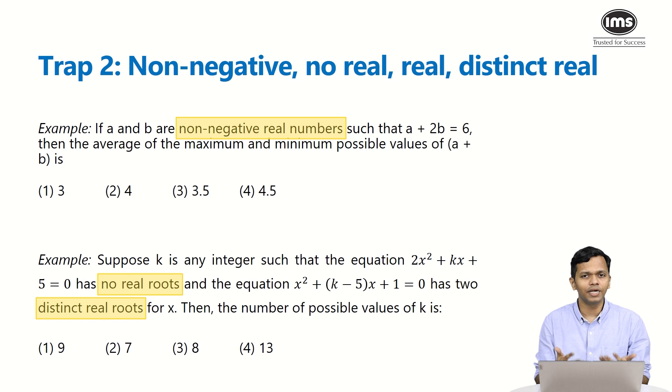So you have to understand the meanings of these words. For example, let's look at the first question: if a and b are non-negative real numbers, such that a + 2b = 6, then the average of the maximum and minimum possible values of a + b is. So when they say non-negative, they are excluding all the negative numbers that are there, but you can include zero in this particular case. So the remaining question is very simple, but if you forget that non-negative real numbers also include zero, then you might end up making a mistake on this question. Let's also have a look at the second question. Suppose k is any integer such that the equation 2x² + kx + 5 = 0 has no real roots.